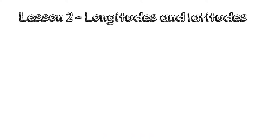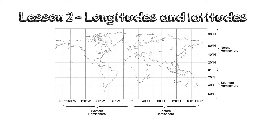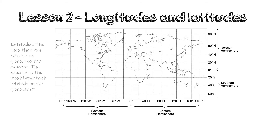Now let's take a look at lesson 2, which is all about longitudes and latitudes. We've established that the Earth is a sphere. If we want to represent it on a piece of paper, it will be like pressing a ball flat, which is very difficult. This is the reason why there are lines on globes as well as on maps. These lines run parallel to one another and there are two types of lines. The first one is the latitudes — the line runs across the globe like the equator. The equator is the most important latitude on the globe at zero degrees. The place or position they indicate are called latitudes and they are measured in degrees north or south of the equator.